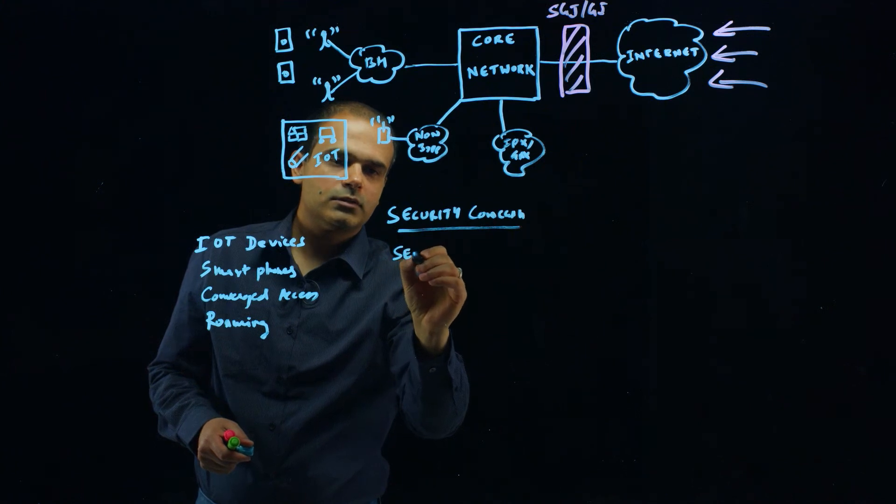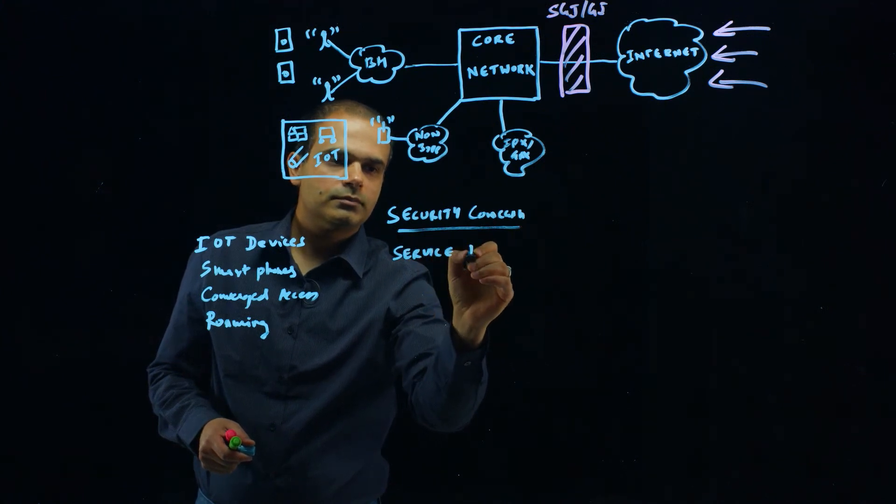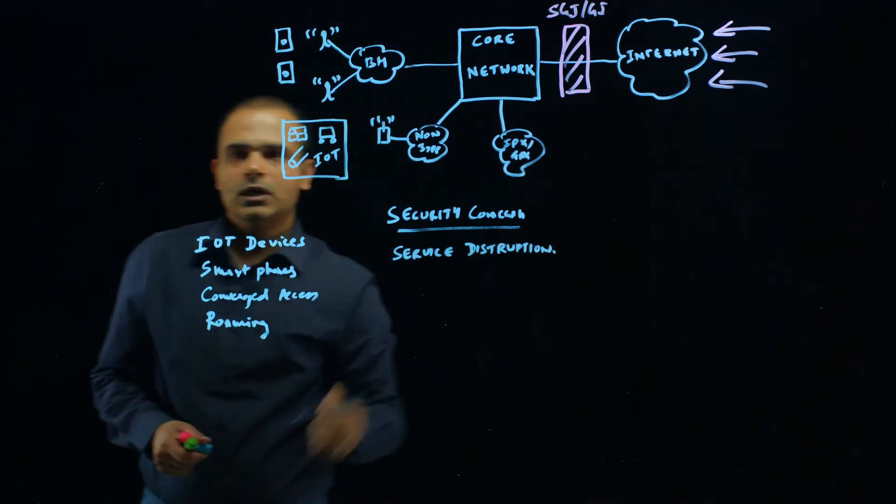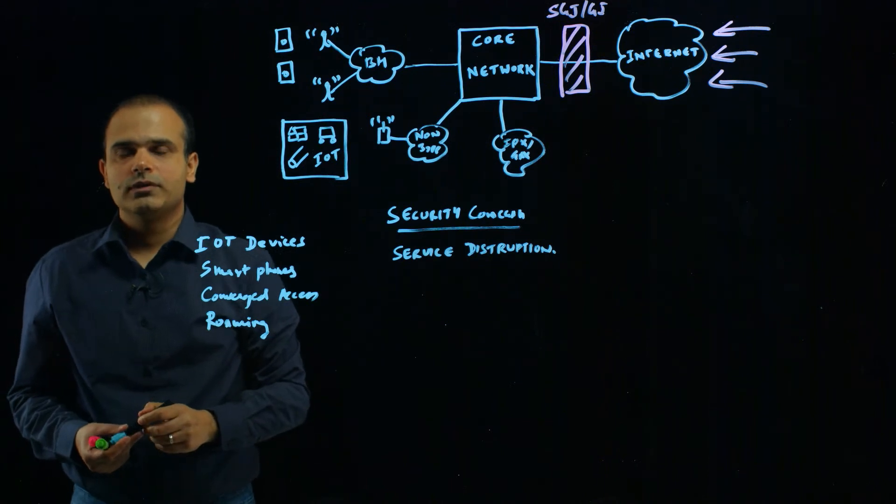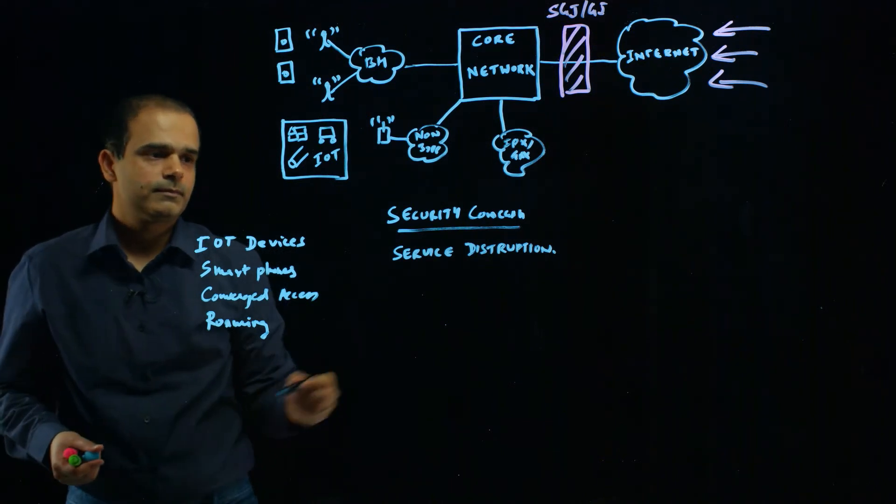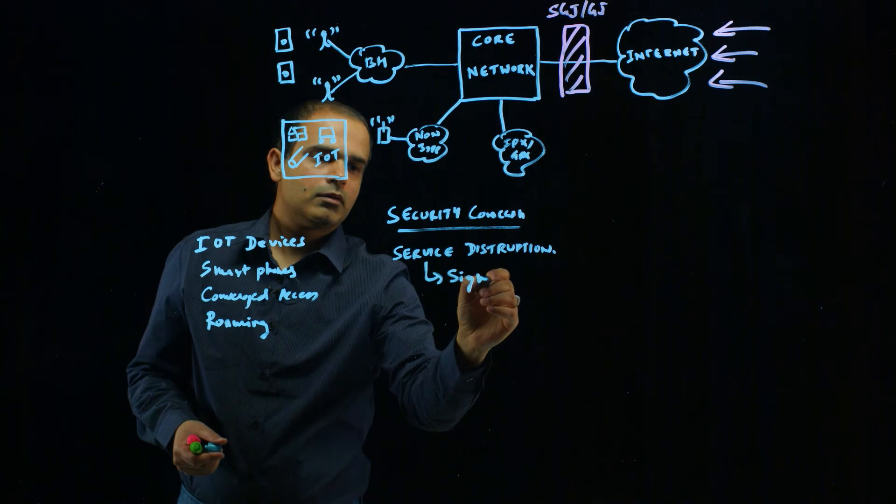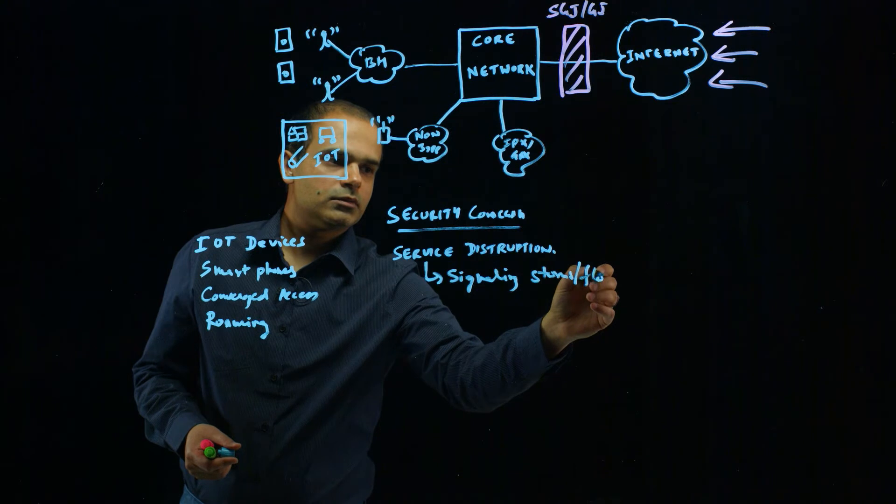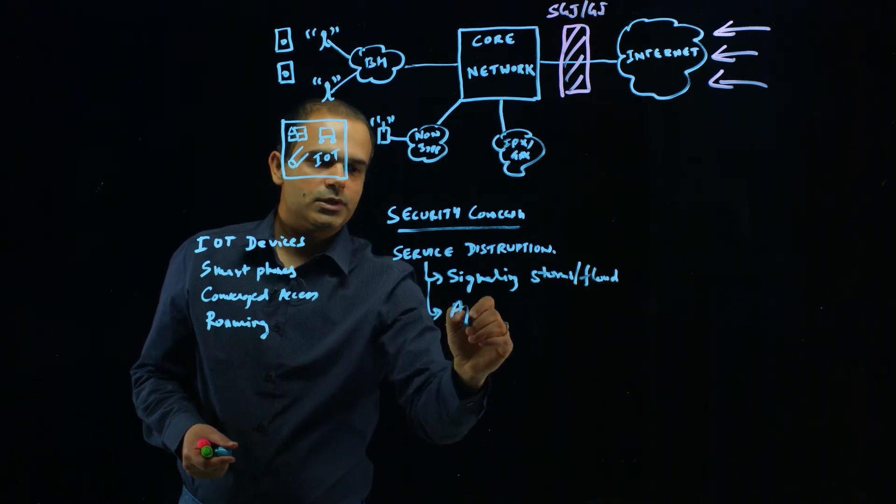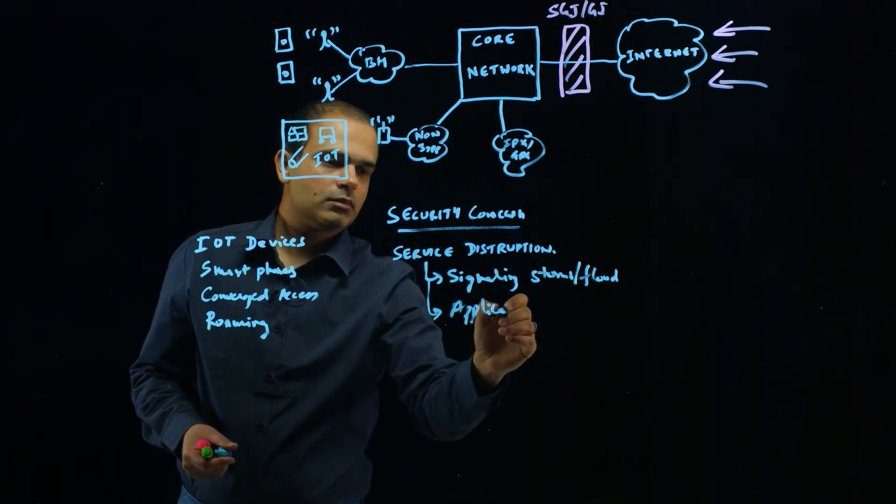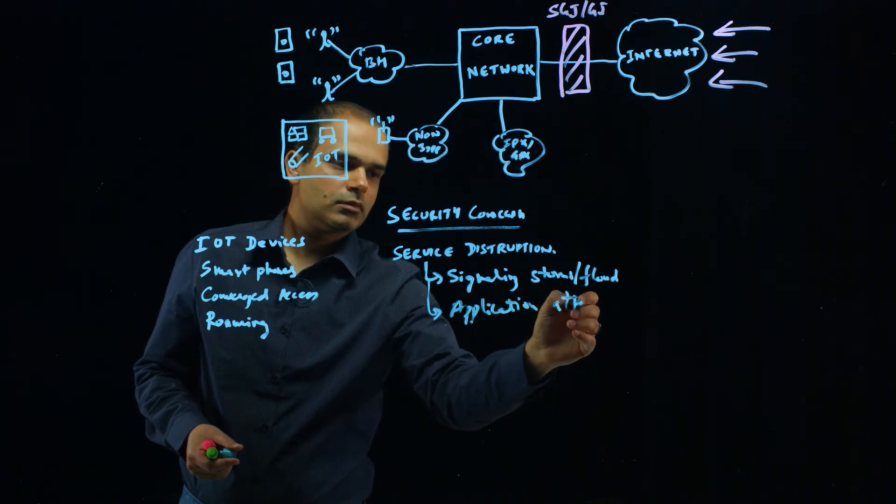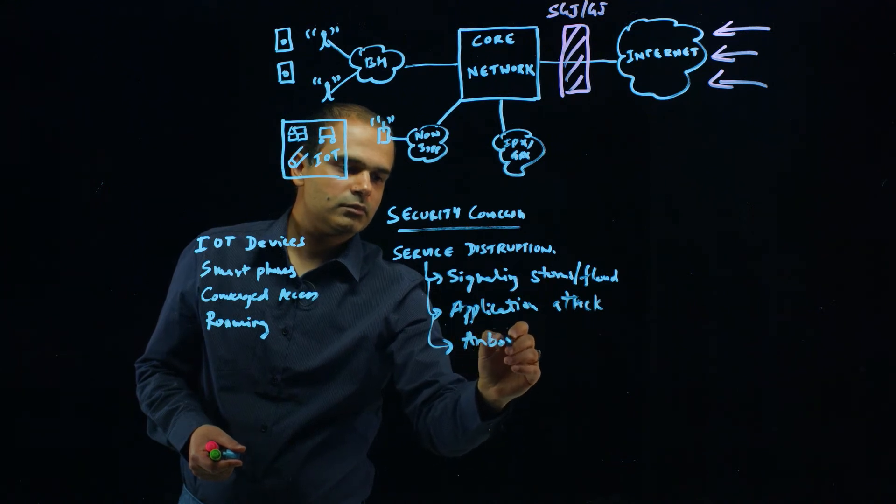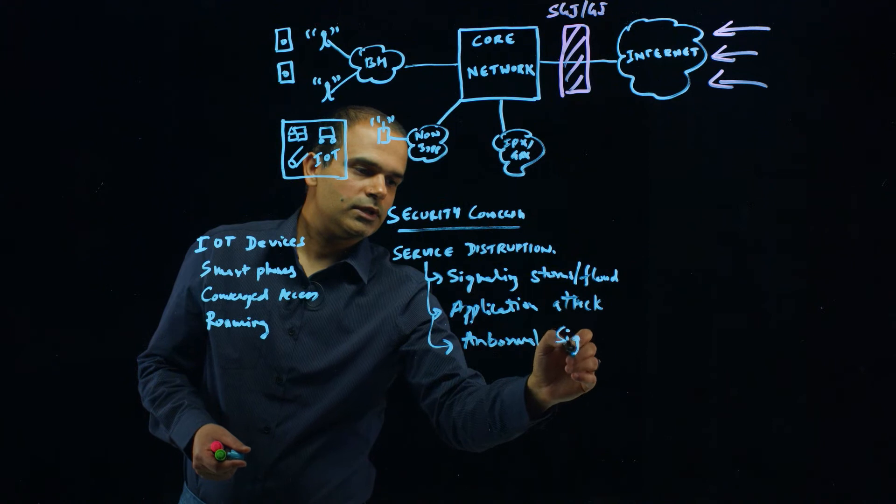The first one is service disruption. Service disruption can happen because of signaling storms and floods, it can happen due to application layer attacks, and it can happen due to abnormal signaling traffic.